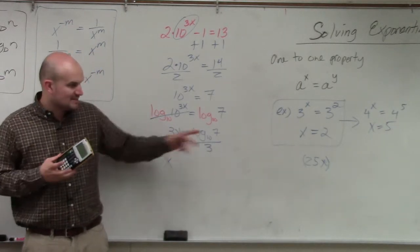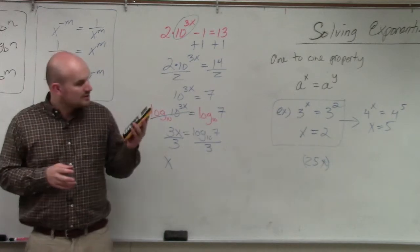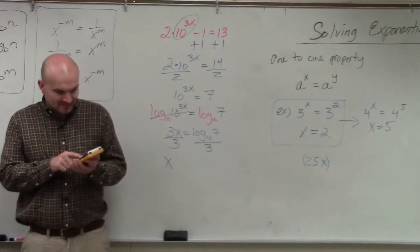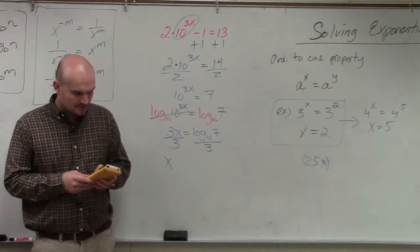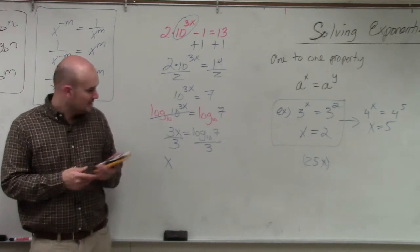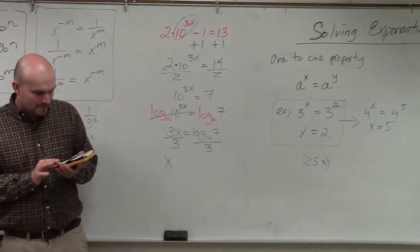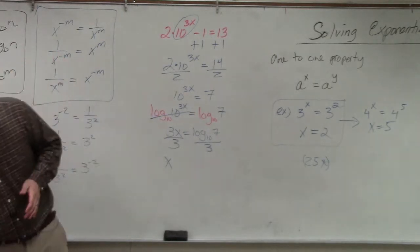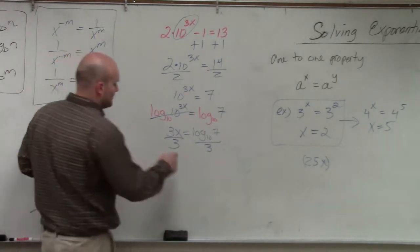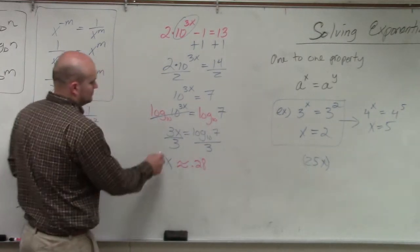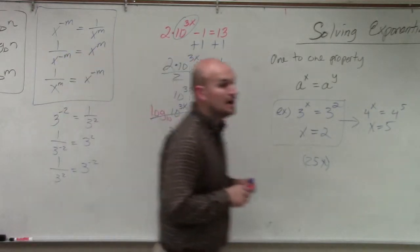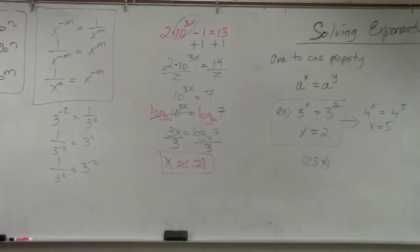But basically what you're going to do is, since it's log base 10, that's what your calculator and phone do. So you do log of 7, or you might have to type 7 log first. So you do log of 7, then you divide it by 3. And I'm going to round my answer to approximately 0.28. That's what it means, the equal sign. Yeah, it means approximate. It means I'm rounding my answer. Okay, thank you.